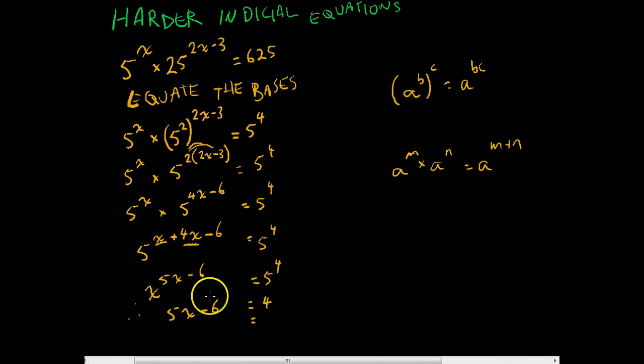Now we go through some pretty simple algebra. That negative 6 moves over here. We end up with 4 plus 6 which gives us 10, 5x equals 10, therefore x is 10 divided by 5, x equals 2.